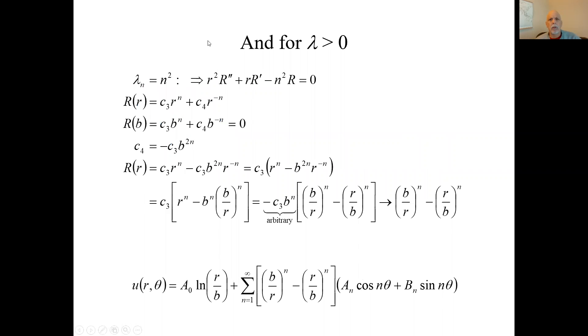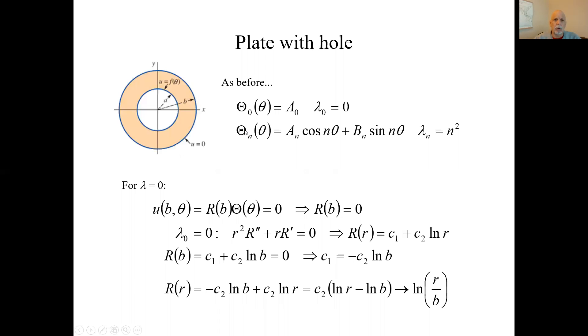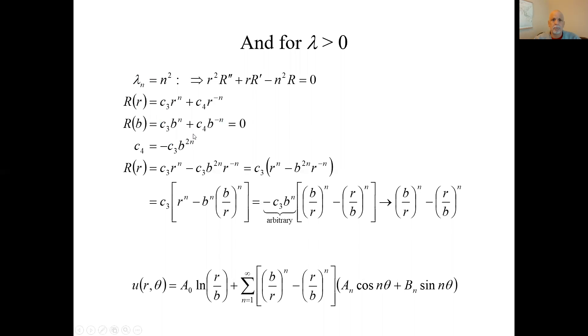Now what about positive lambdas? Here was the general solution for that case. Then we plug in B for R. We get this relationship. That equals 0 because that was the boundary condition on the outer edge. It gives us a relationship between C₃ and C₄, or I can express C₄ in terms of C₃.